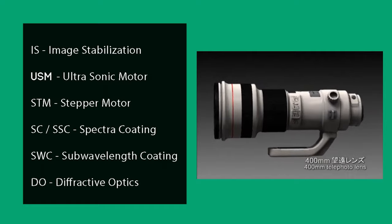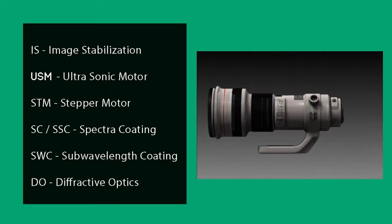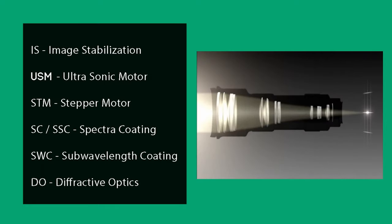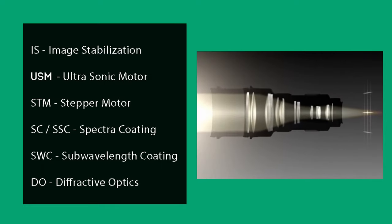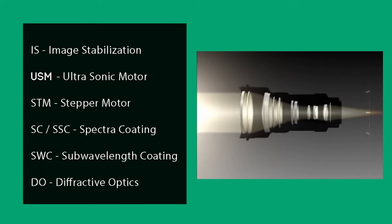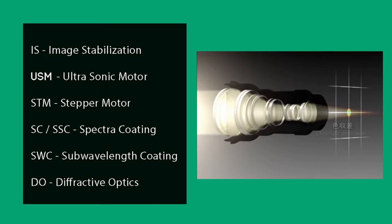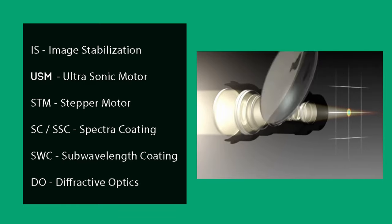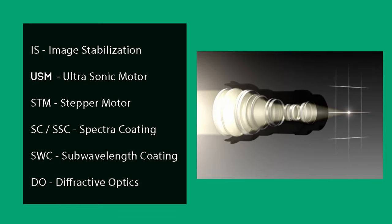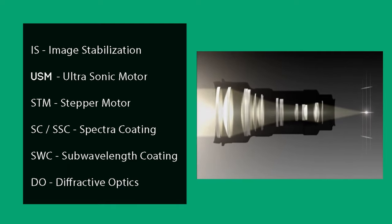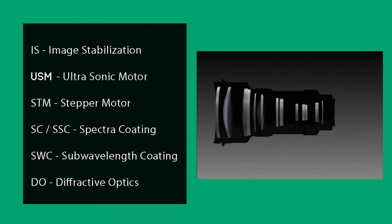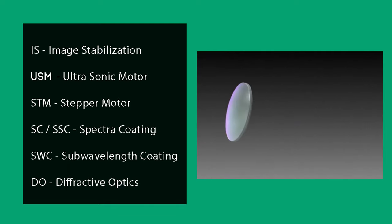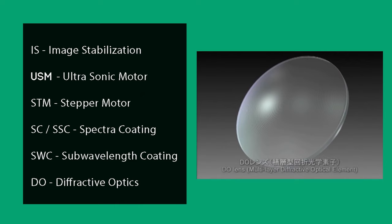Letter codes like SC are the spectra or super-spectra coatings, SWC is sub-wavelength coating, and DO is for diffractive optics. These are all coatings and improvements to the glass elements that decrease reflections and flaring. DO lenses will have a green ring on the barrel.